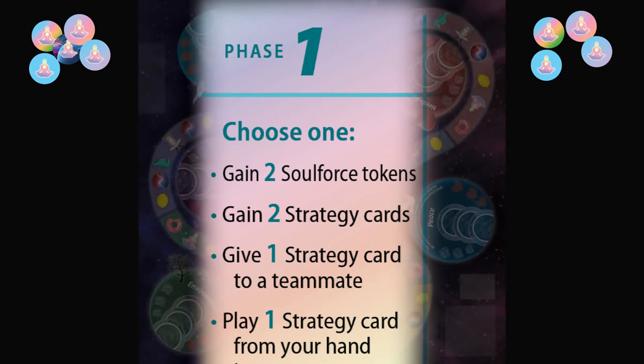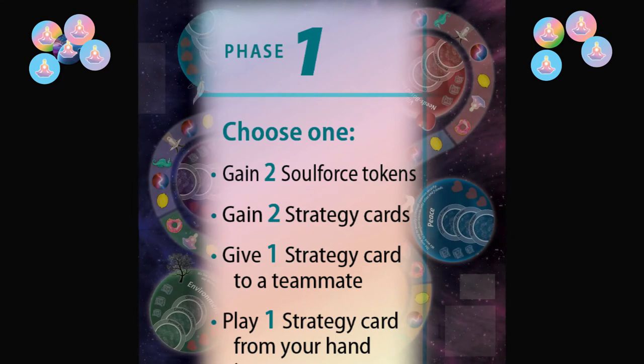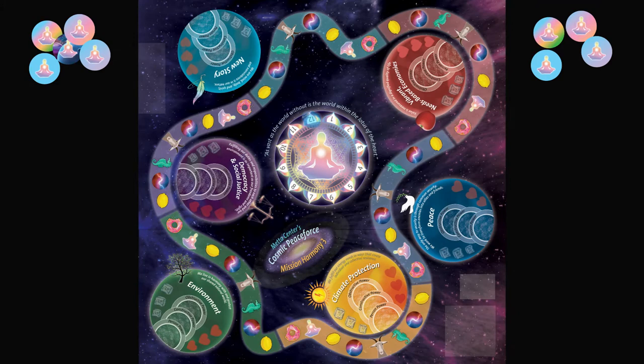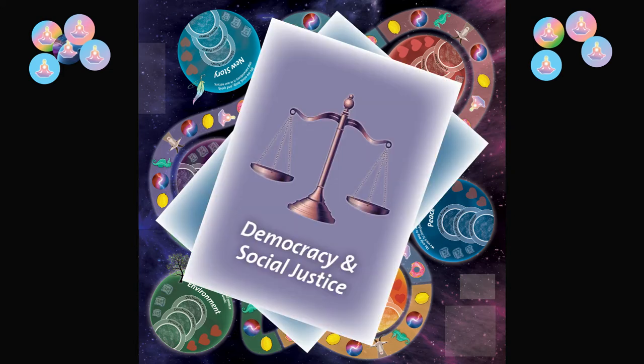I don't have any strategy cards for the dimension that I'm headed to, so I might think about taking a strategy card. It looks like I have this strategy card and Derek's on his way into that dimension, so it might be strategic to give him that. I don't have any strategy cards that correspond to the dimension I'm in right now, so I think I'm going to get two strategy cards.